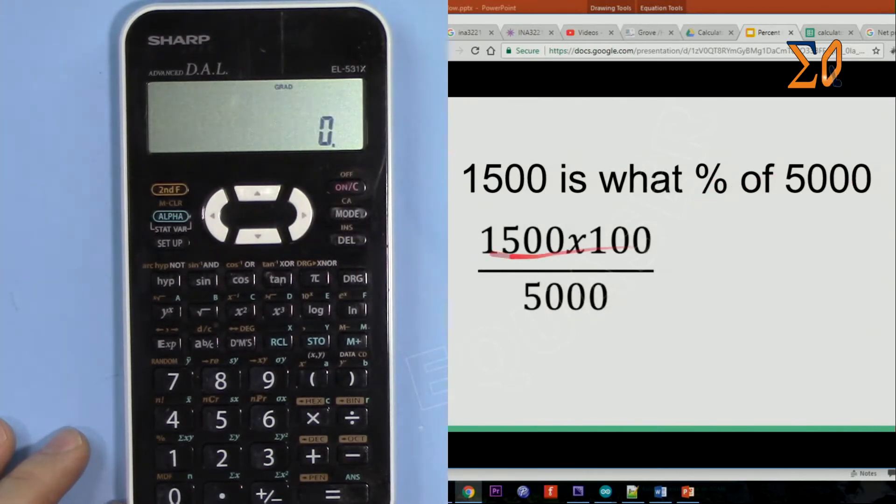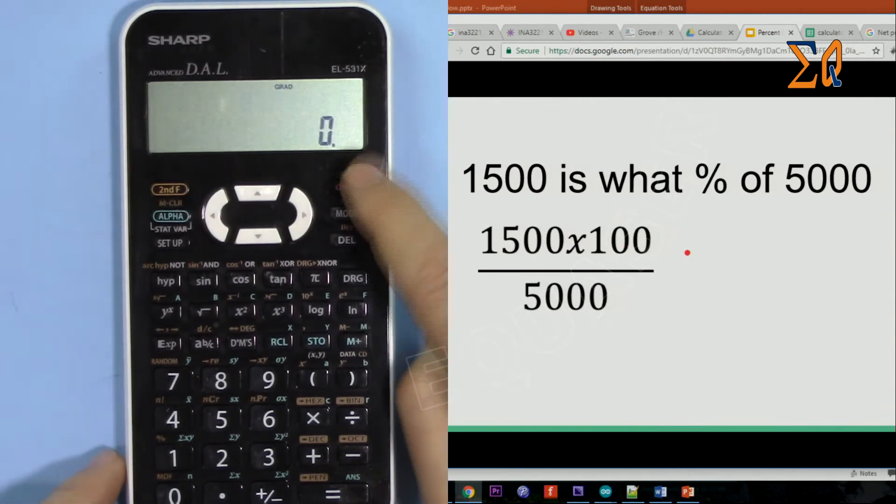The answer would be 1500 times 100. The hundred is not mentioned here, but by default we know the total value is always 100, so 100 is another number that comes into the equation, so you should not forget it.